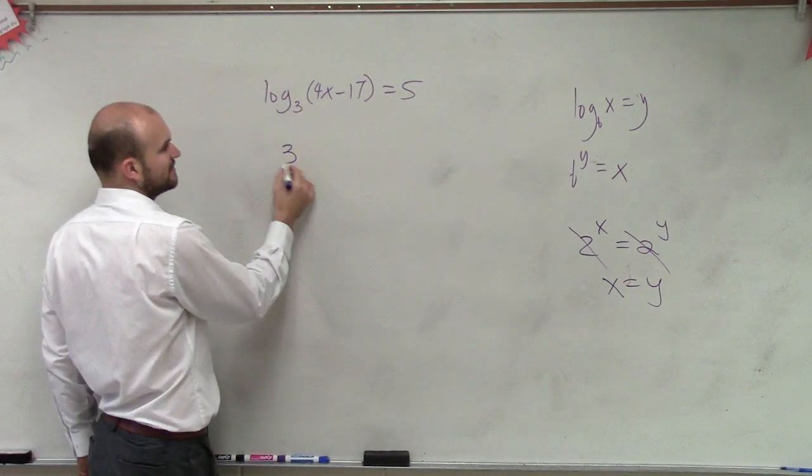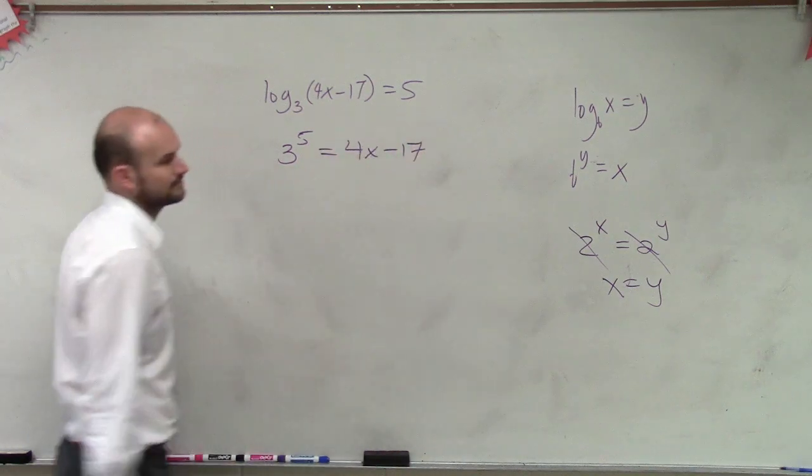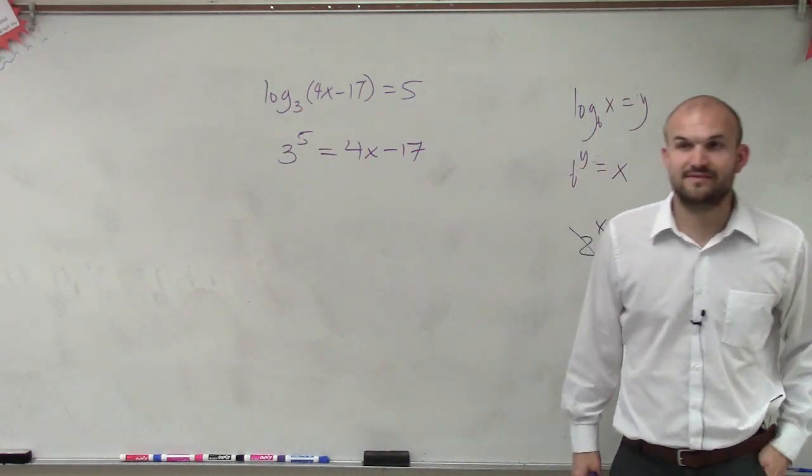To rewrite as exponential, since we've done so much practice with this, it's 3 raised to the 5th power equals 4x minus 17.